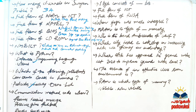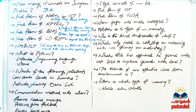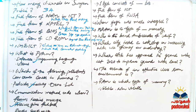When does the communication method end? There are four options: receiver receives message, receiver gives feedback, sender sends message, receiver decodes message. The answer is: receiver gives feedback.